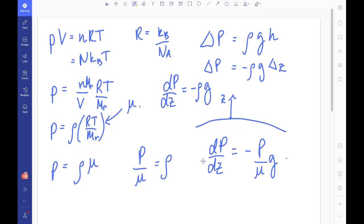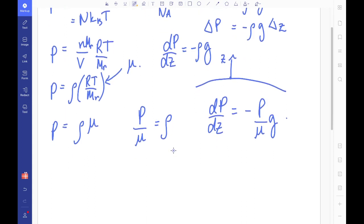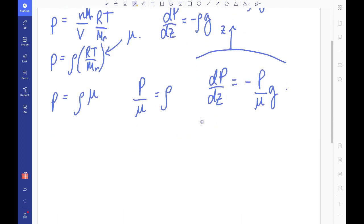Okay, now this is a differential equation, and it's actually a nice one, it's a separable one. So I can divide by p and then multiply by my dz and take the integral. So that would give me dp over p is equal to minus g over mu dz and take the integral.